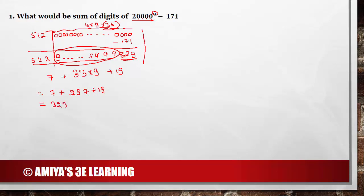So this is the conventional method of doing this. I am using the same conventional method but with a different approach. First of all, how many zeros do we have? We have 4 zeros in the base and the power is 9. This is nothing but a total of 36 zeros, or we can say 36 nines. The number of zeros in the base into power gives the number of zeros or number of nines.